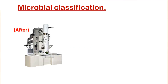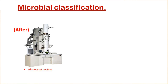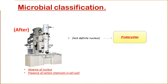In the 1940s, after the discovery of the electron microscope, scientists observed that many species of microbes possess certain characteristics unlike those of animals and plants — for example, absence of a nucleus and presence of certain chemicals in the cell wall. On the basis of these characteristics, all organisms were divided into two groups: prokaryotes, which lack a definite nucleus, and eukaryotes, which have a proper nucleus bounded by a nuclear membrane. Microbes were placed in these groups according to their respective characteristics.